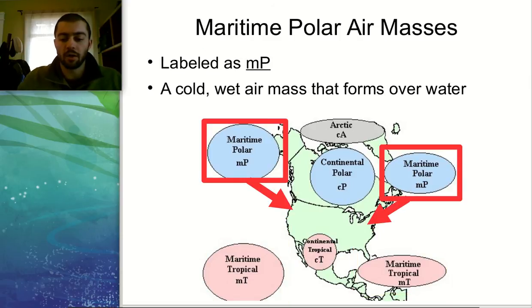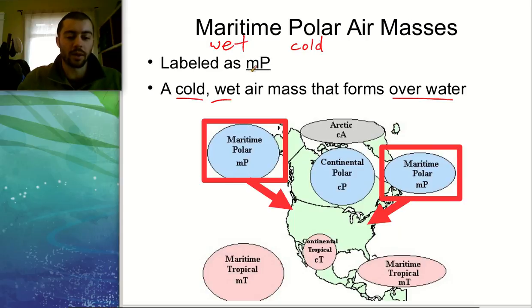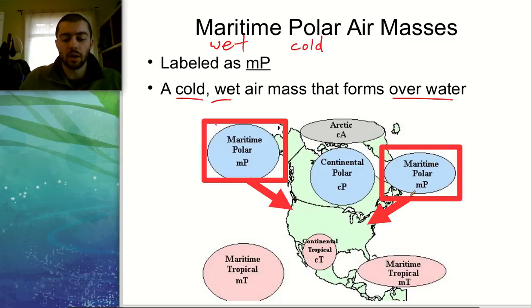A maritime polar air mass: maritime means wet, polar means cold — so we have a cold, wet air mass that formed over water. The label is lowercase m, uppercase P. The pattern for labeling is: first, whether it's maritime or continental with a lowercase letter; second, whether it's polar or tropical with an uppercase letter. Maritime polar masses come from the northern parts of the oceans — the northern Pacific, northern Atlantic, or even the Arctic. These bring moist, cold air and are where we'll get some snowstorms from.